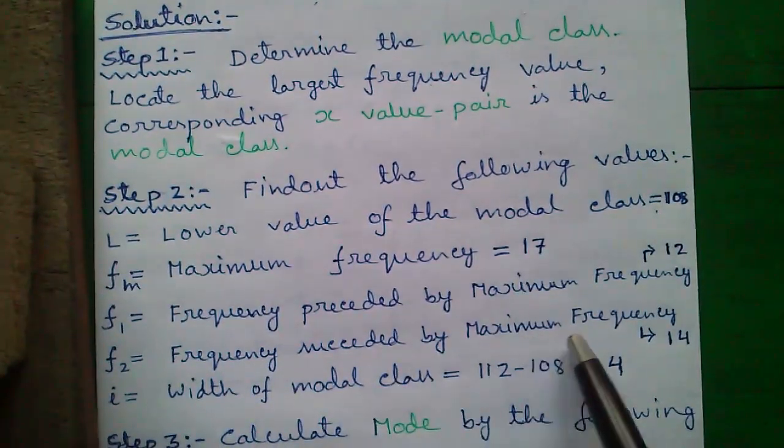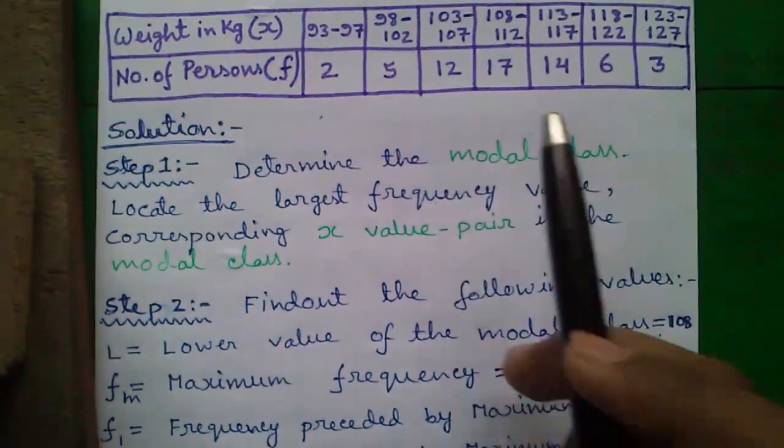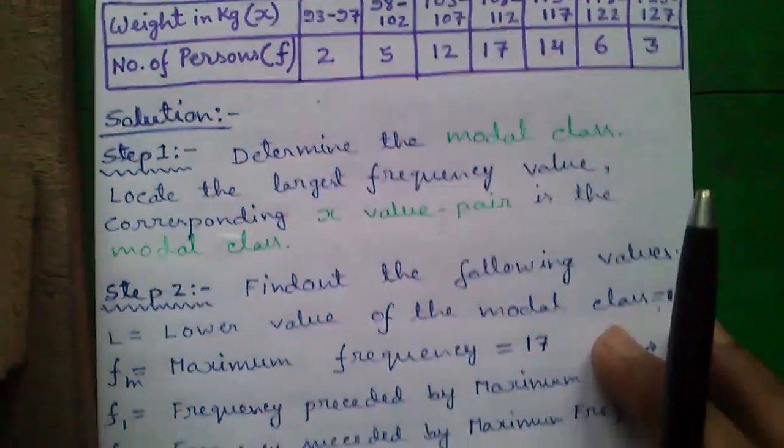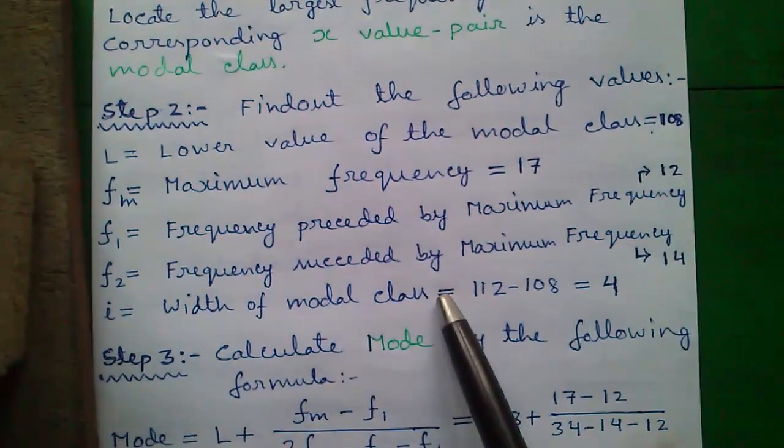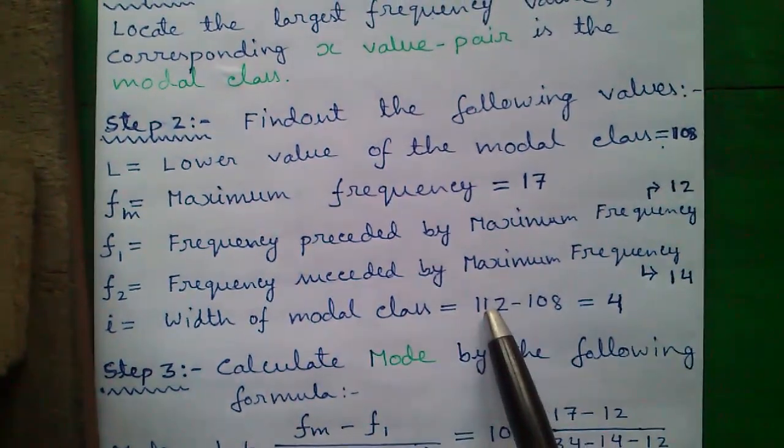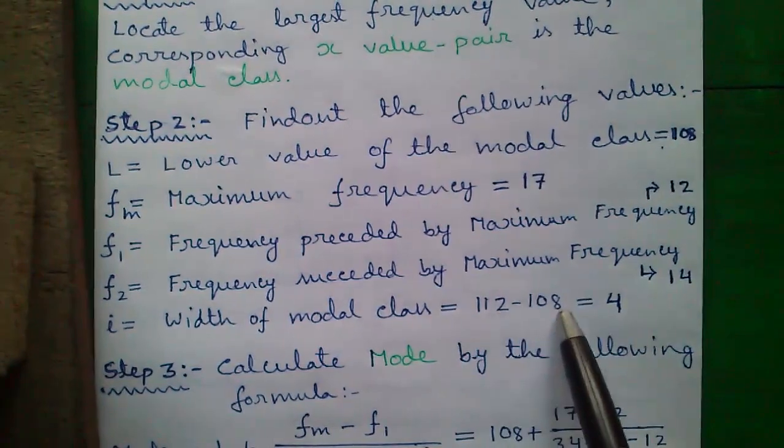F2 is the frequency succeeding the maximum frequency, which is 14. And finally, i is the width of the modal class, which is given by largest value minus smallest value, equals 4.